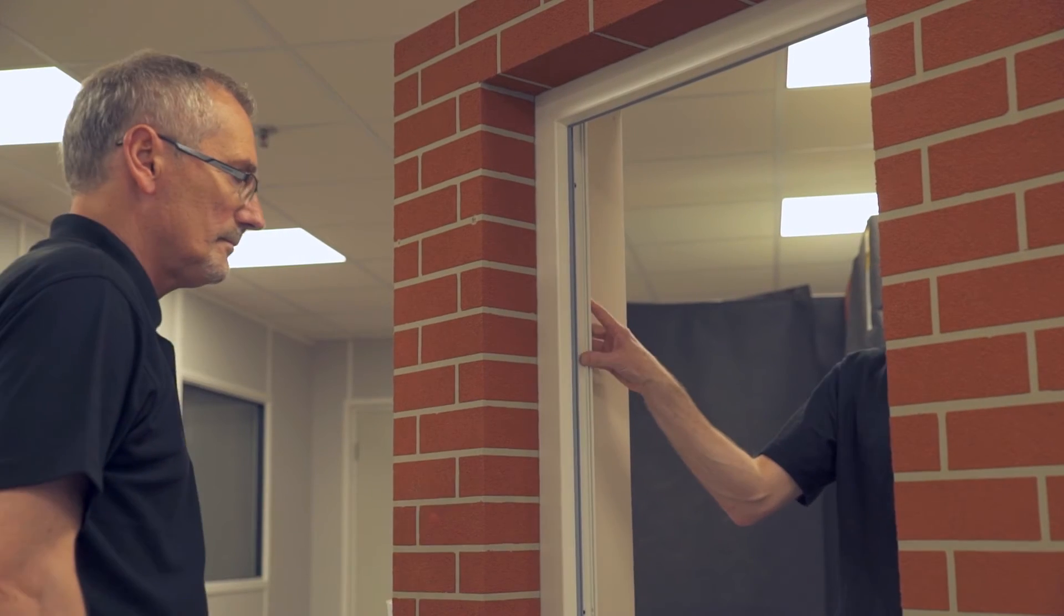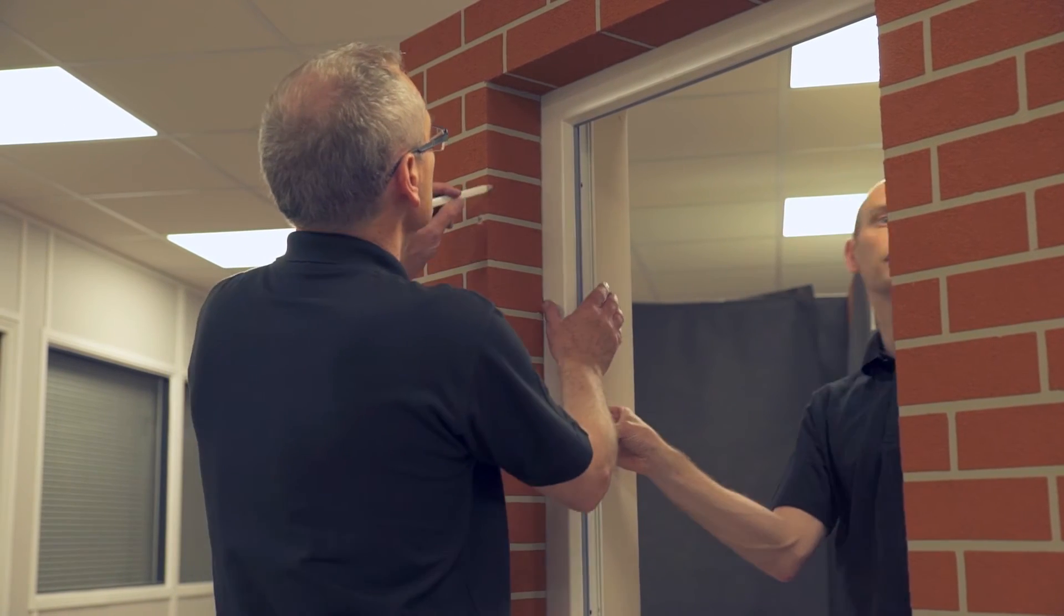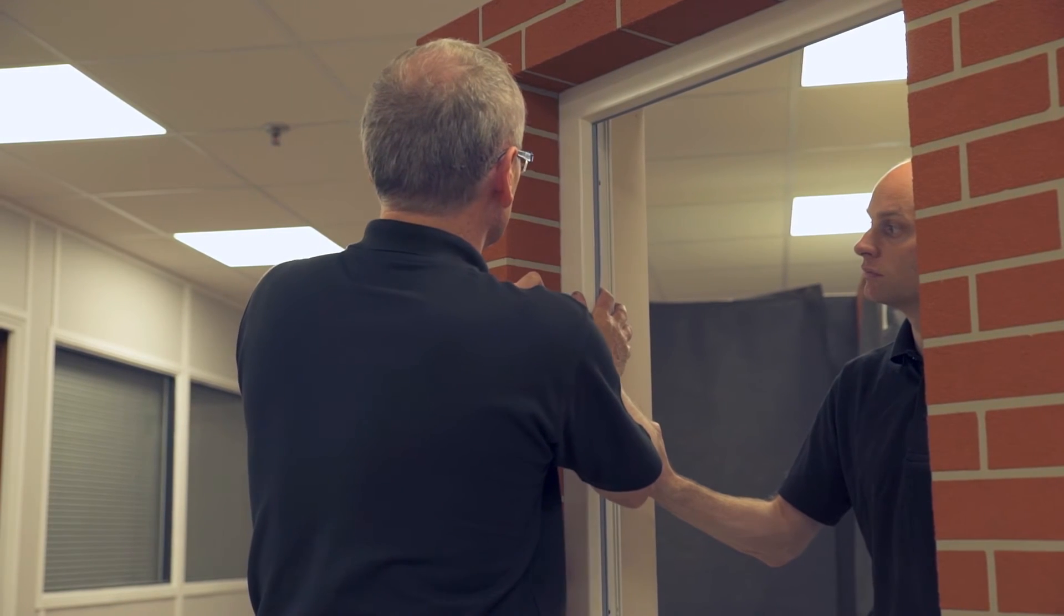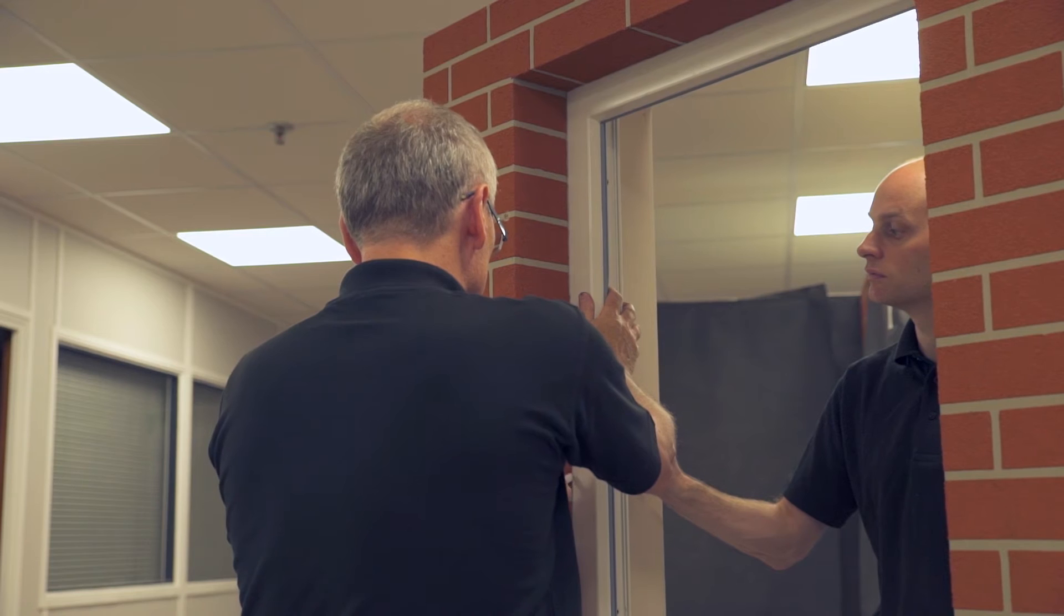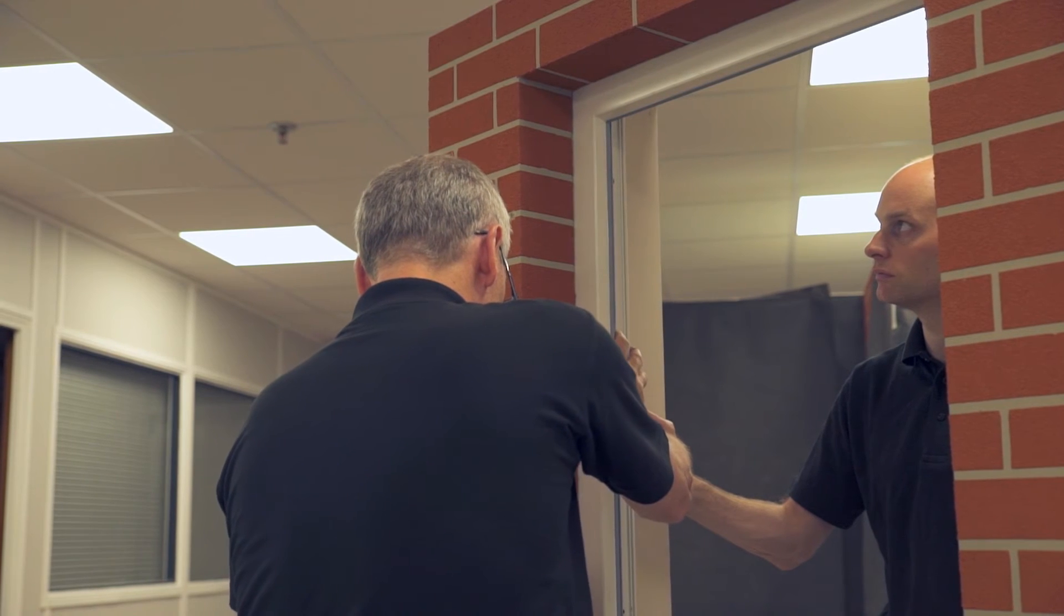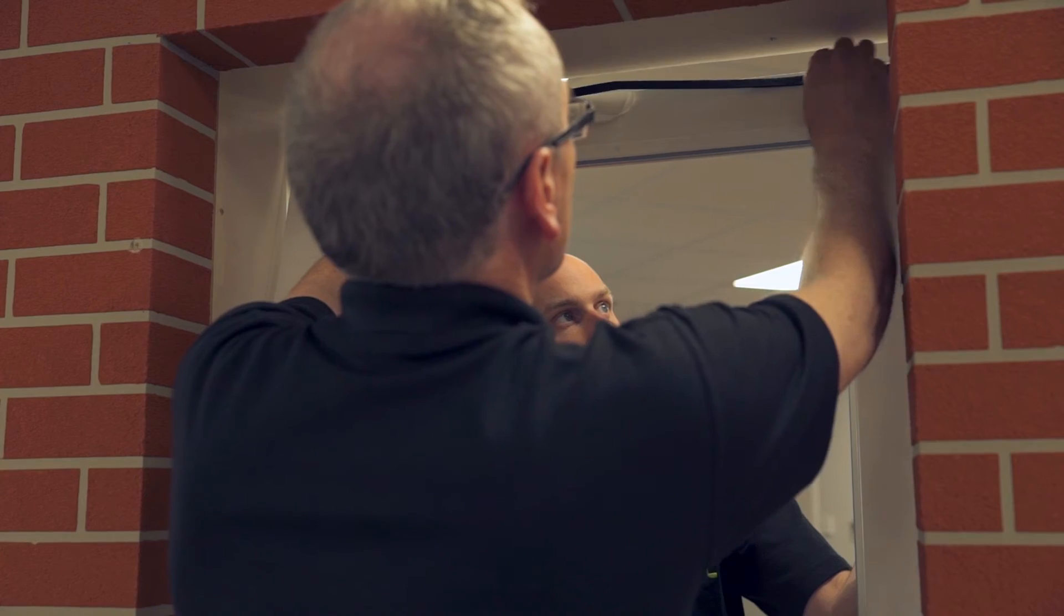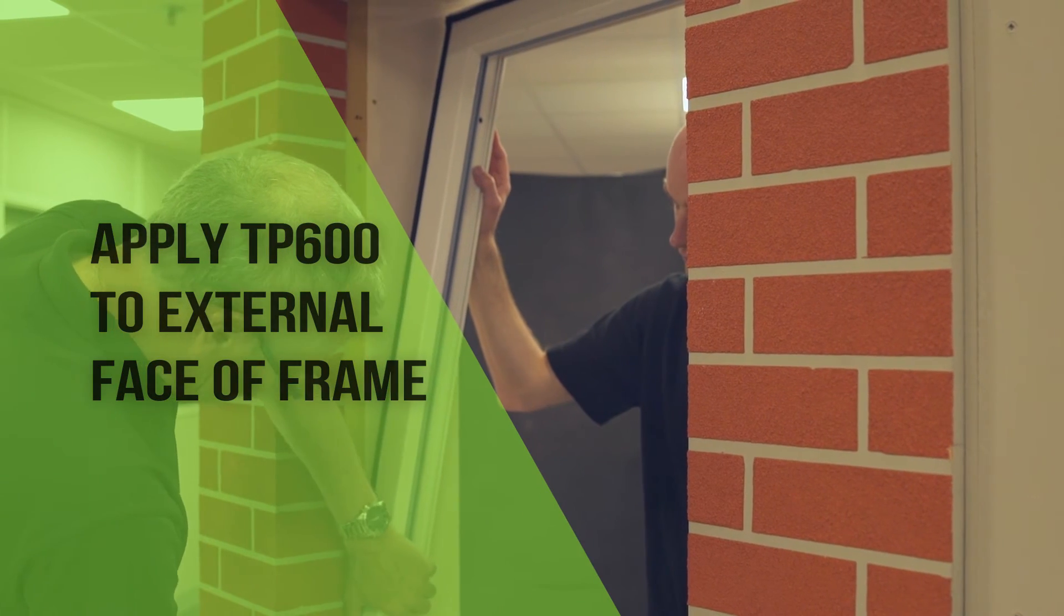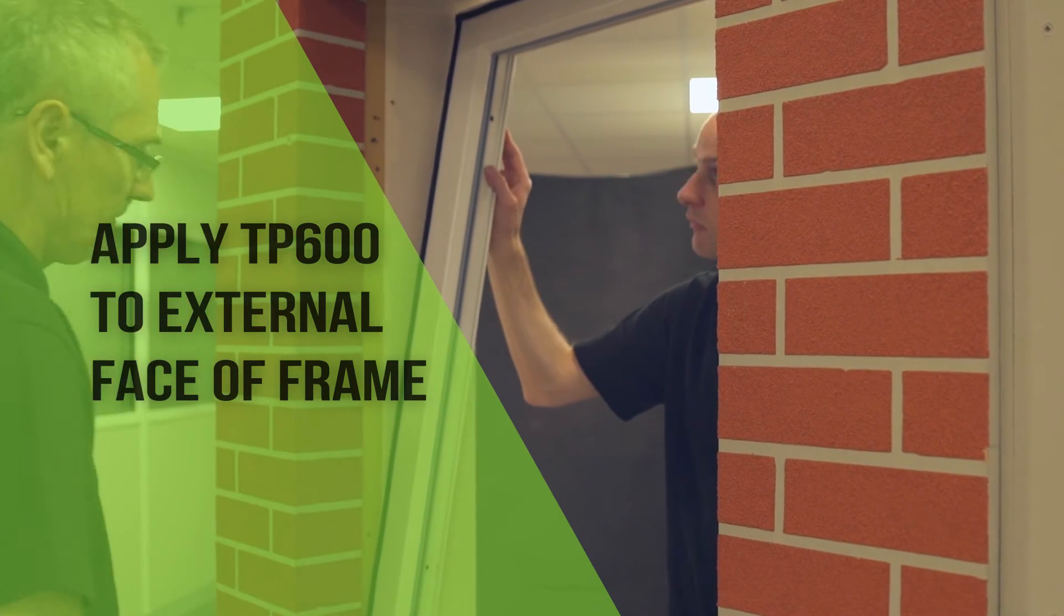If the rear face of the external brickwork is not suitable for the TP600 to adhere to, it can be located directly onto the frame face. The window is temporarily placed in the opening and the edge of the brickwork marked on the frame. The TP600 is applied to the head and then the two sides, taking care with jointing as in the previous method.